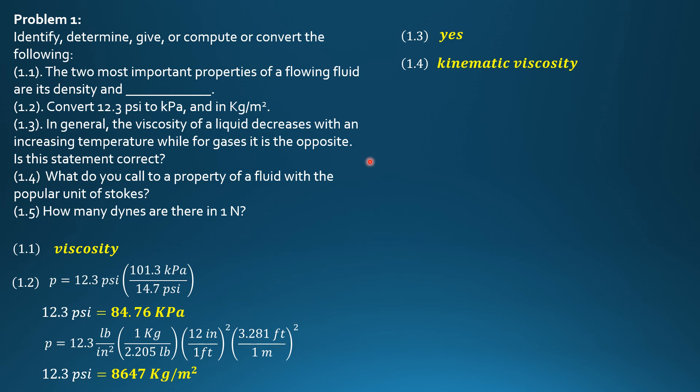How many dynes are there in 1 newton? 1 dyne is 1 gram centimeter per second squared. That's the unit of a dyne. So 1 newton is 1 kilogram times meter per second squared. 1 kilogram is 1,000 grams, 1 meter is 100 centimeters. So therefore, 1 newton is 100,000 grams times centimeter per second squared. And because this is dynes, 1 newton is 100,000 dynes. So that's it for this first example.